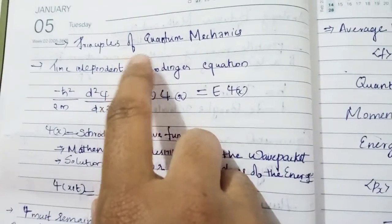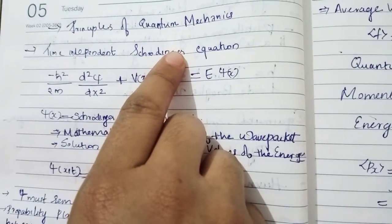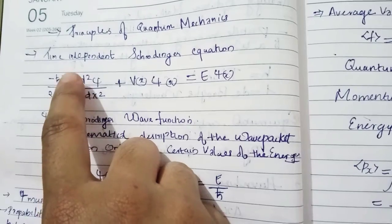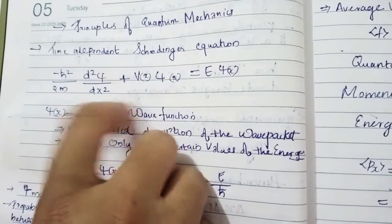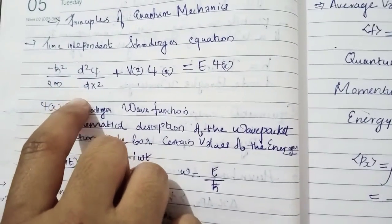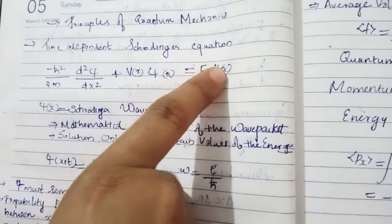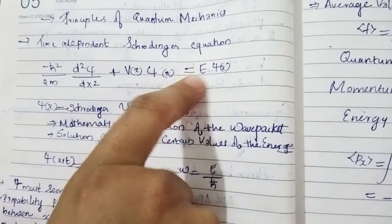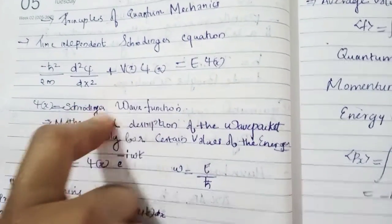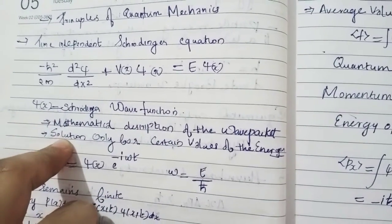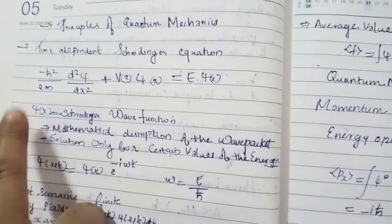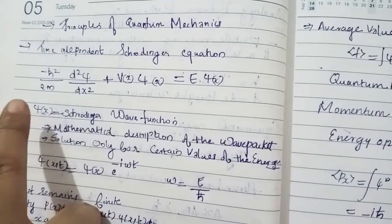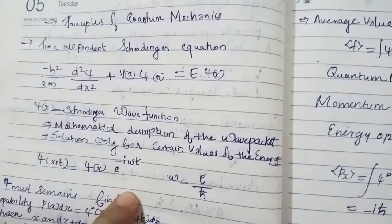The main part of quantum mechanics is its principles. We discuss the time-independent Schrödinger equation: minus H-cross squared over 2m times d-squared psi over dx-squared, plus V(x) psi(x), equals E times psi(x). Here psi(x) is the wave function, E is the energy, and V is the potential. The Schrödinger wave function psi(x) is the mathematical description of a wave packet. The solution exists only for certain allowed values of energy, given by psi(x, t) equals psi(x) times e raised to minus i-omega-t, where omega equals E over H-cross.